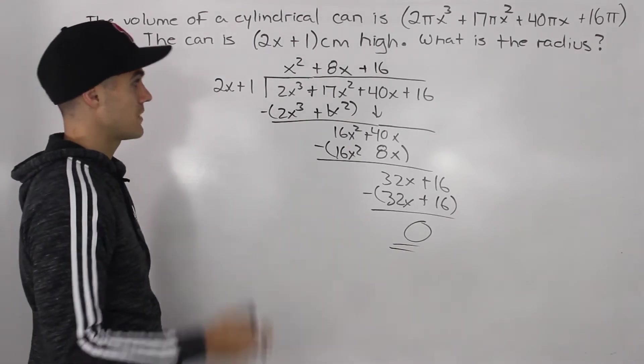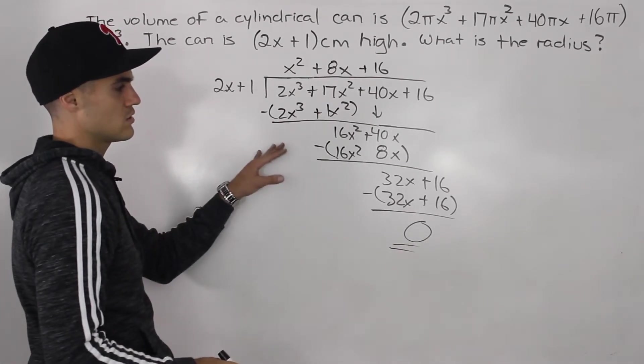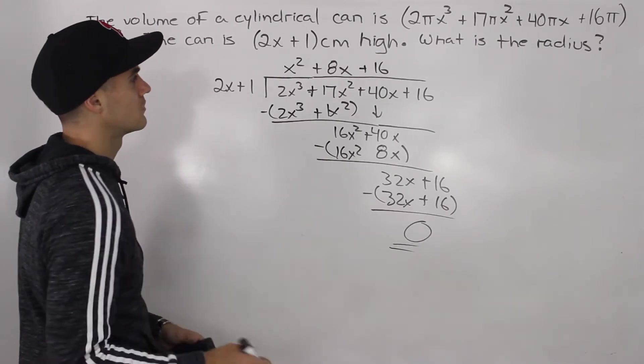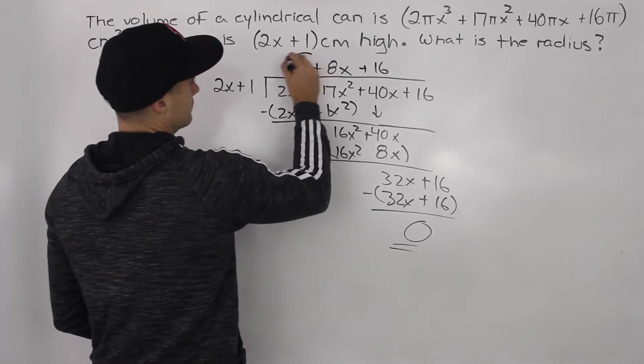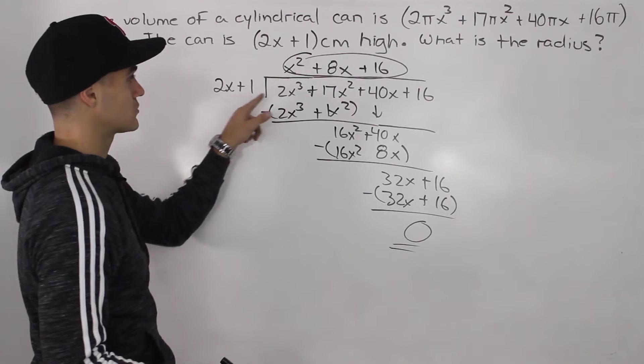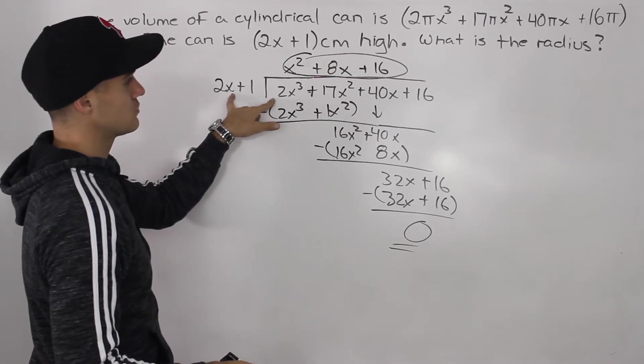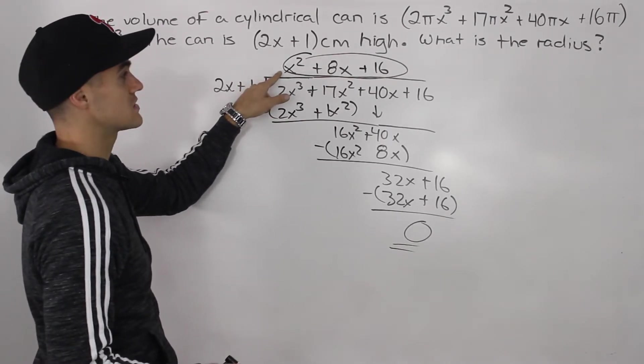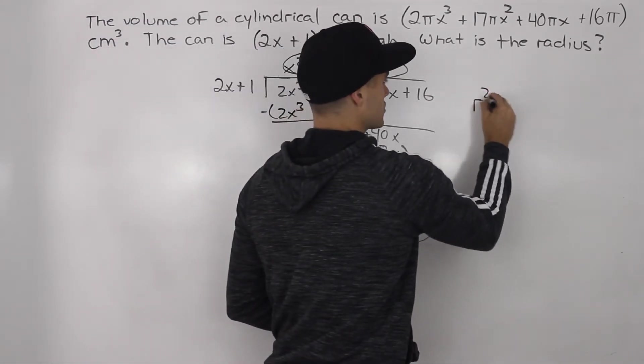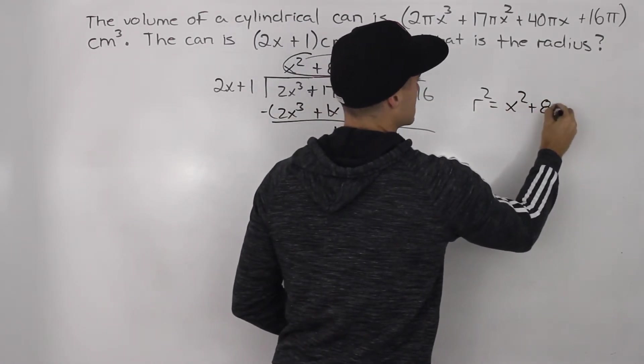Remainder of 0, which makes sense, because in our original expression when we have r² equals the polynomial division, there was no remainder. We had r² equals these two polynomials. This polynomial in the numerator, this polynomial in the denominator, and those two dividing simplify to this quotient. So our next line would be r² = x² + 8x + 16.